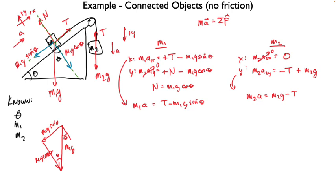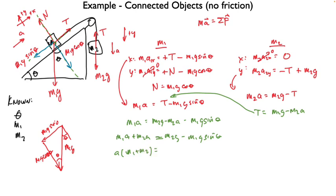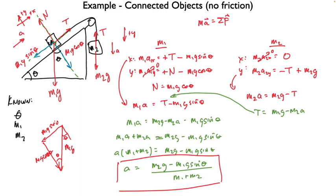I'm going to solve this one for T and shove that in there. M1A equals M2G minus M2A minus M1G sine theta. Get all the A's together. Factor out acceleration. Then divide by that factor. M2G minus M1G sine theta all over M1 plus M2.